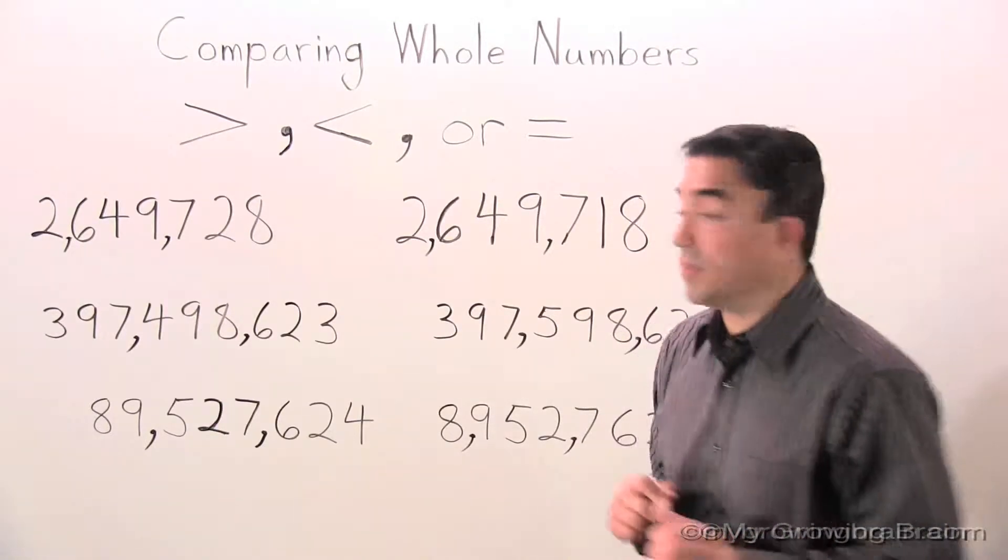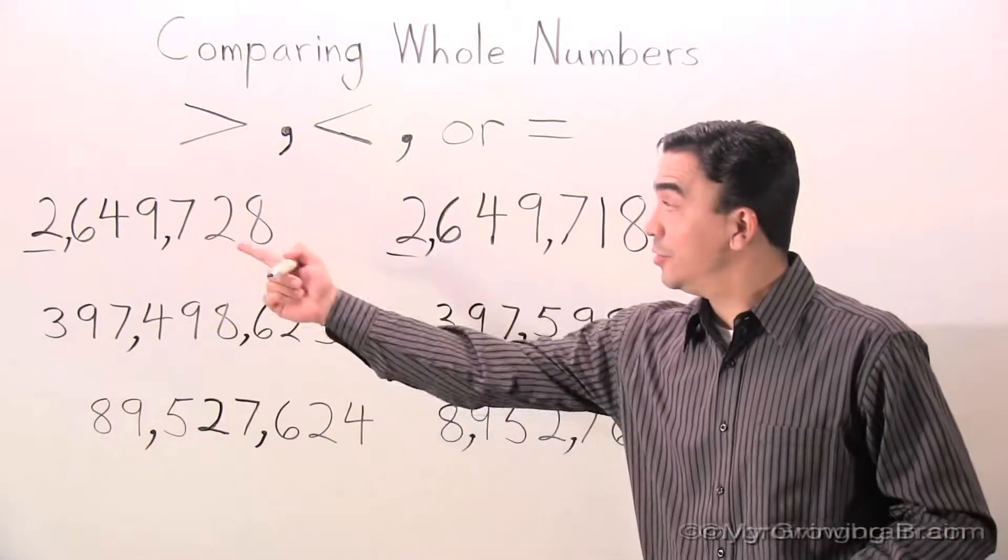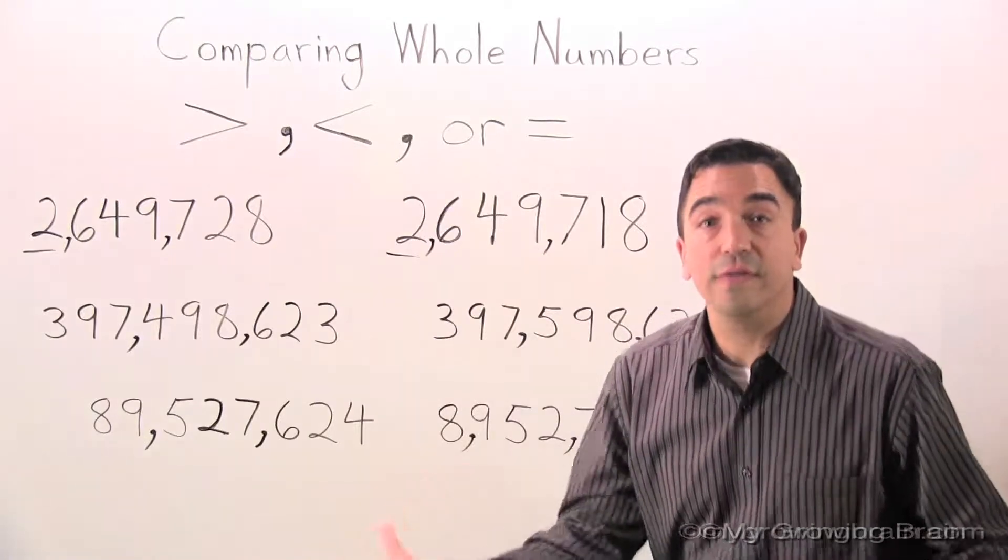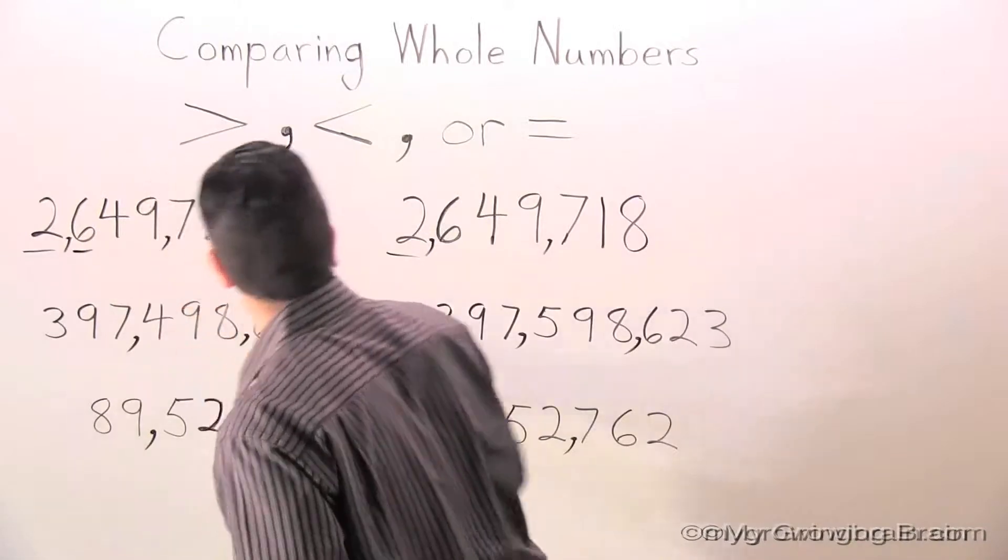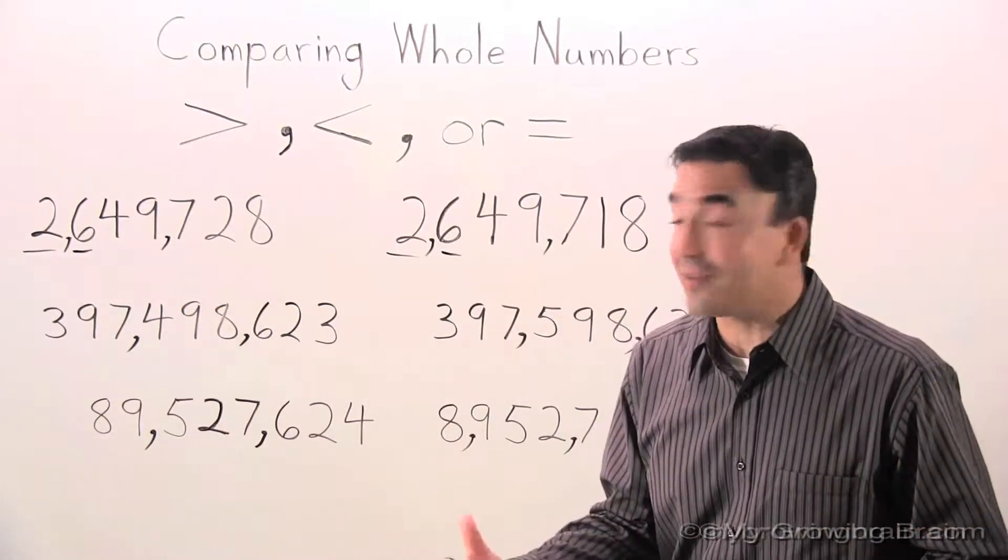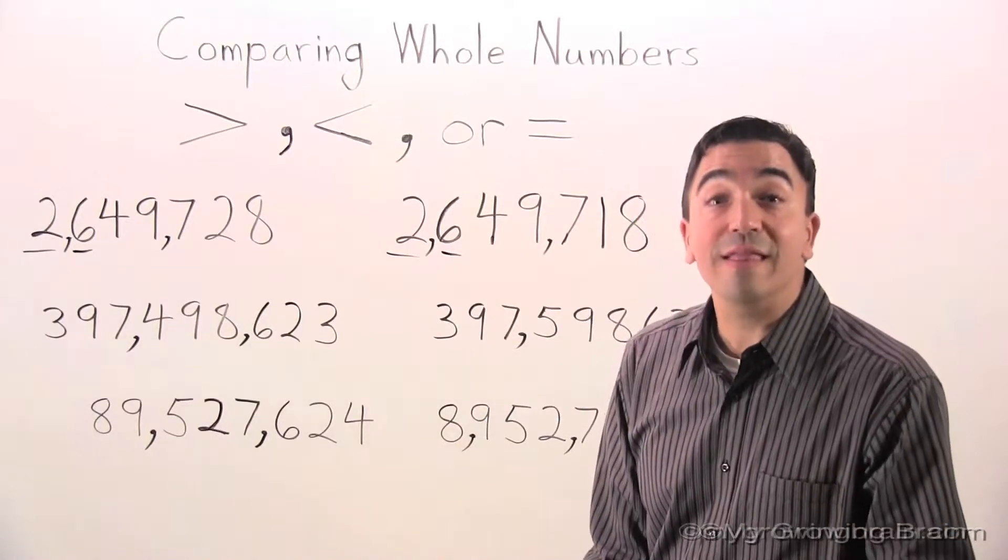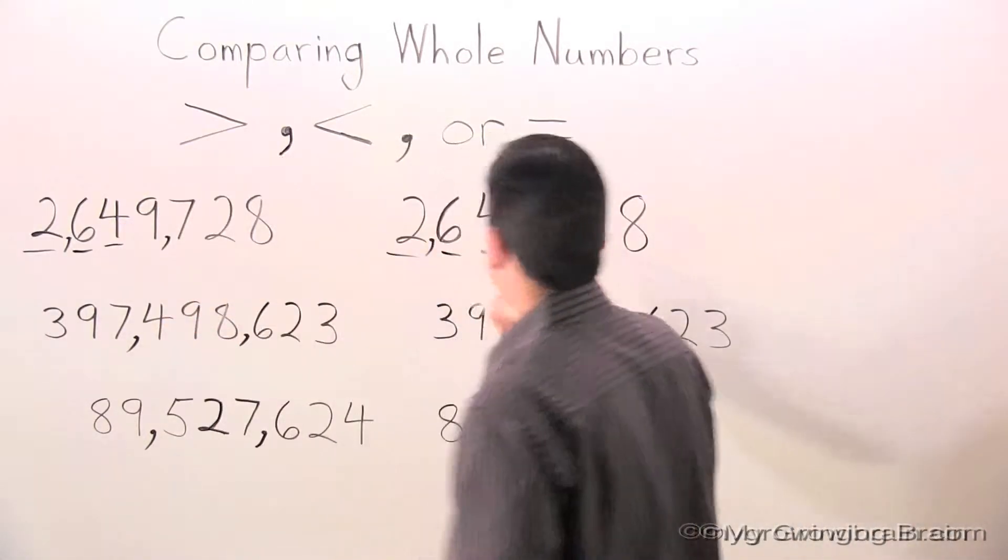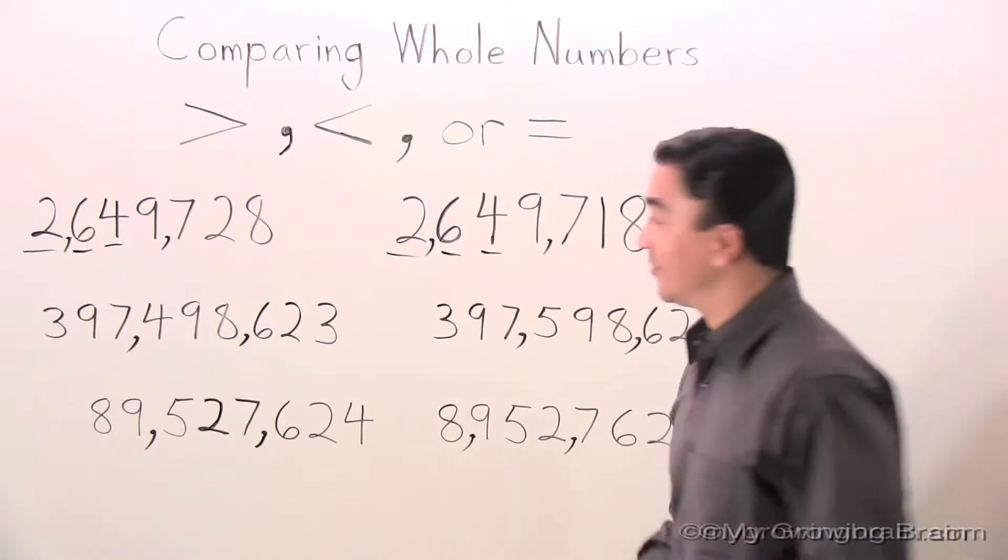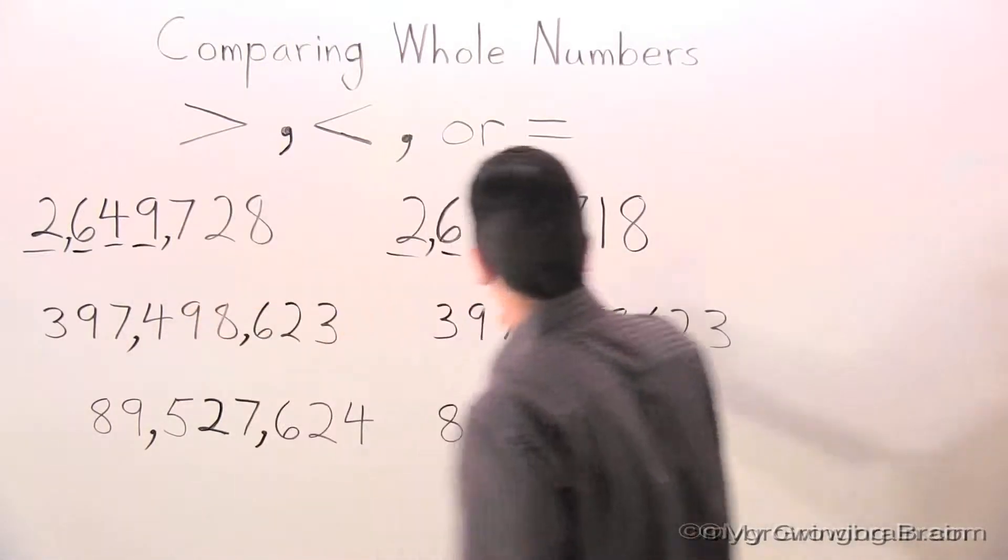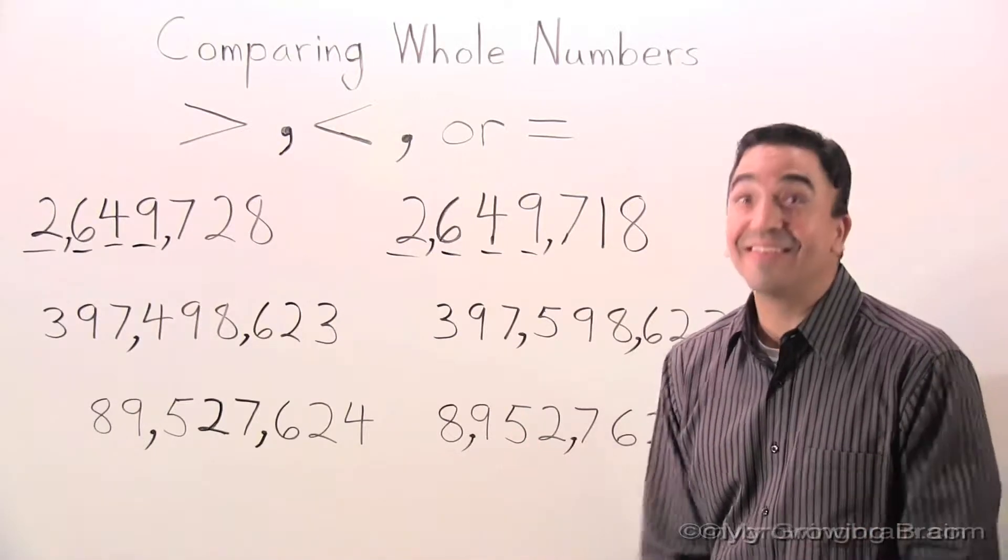Let's start in the millions place. 2, 2. It's the same. So let's go to the hundred thousands. 6, 6. Still the same. Let's move to the ten thousands. 4, 4. Still the same. Let's go to the thousands. 9, 9. Still the same.